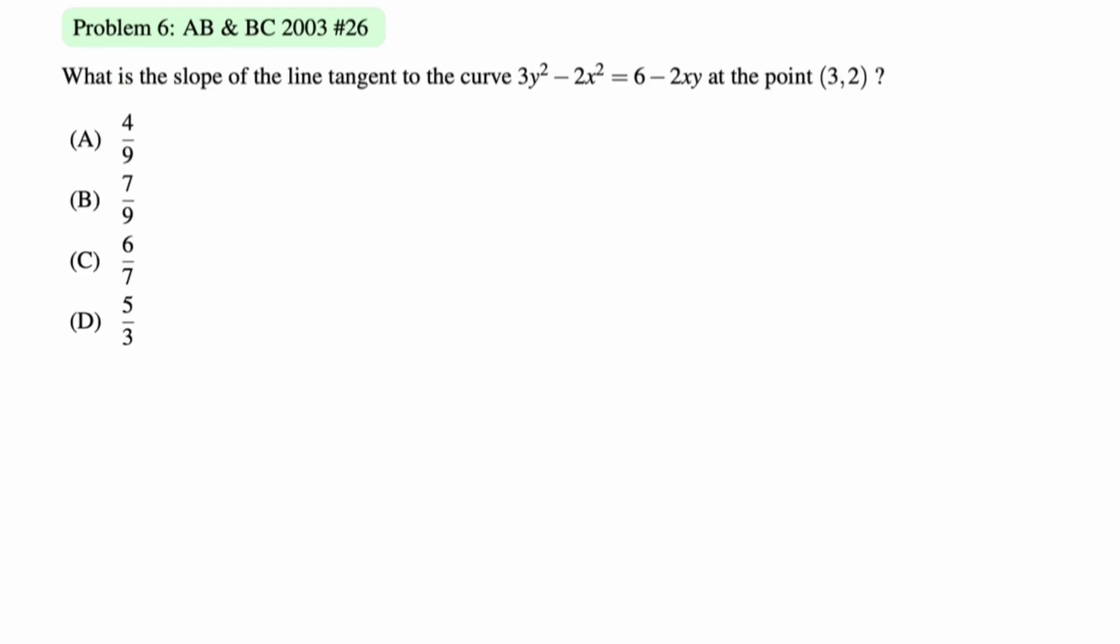So these are like quick hits, just kind of going through them. What is the equation of the line tangent to the curve 3y squared minus 2x squared equals 6 minus 2x times y at the point 3, 2? This is implicit differentiation. It doesn't feel like it, but the thing that people screw up the most on this is, again, forgetting the chain rule. The derivative of y is dy dx, so let's see what we get.